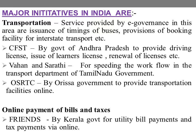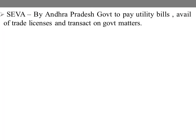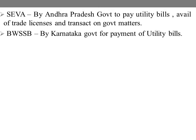The utility bill payments include electricity bill, telephone bill, water bill, university fees, and tax payments online. This is the e-governance initiative known as the FRIENDS Center by the Kerala government. Next is BWSB by the Karnataka government for payment of utility bills. These are the firstly introduced e-governance initiatives for online payment of bills and taxes.